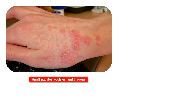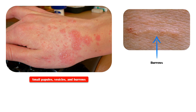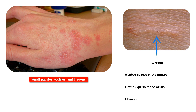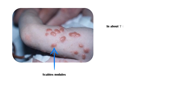On examination, affected areas may contain small papules, vesicles, and burrows. Burrows are a pathognomonic sign that represents the intraepidermal tunnel created by the moving female mite. A black dot may be seen at one end of the burrow, indicating the presence of a mite. Typical locations of burrows include webbed spaces of the fingers, flexor surfaces of the wrists, elbows, and axillae. Scabies nodules occur in about 7-10% of patients, especially in young children.